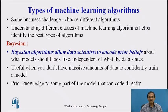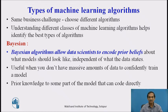The first class is Bayesian algorithms. A Bayesian algorithm allows data scientists to encode prior beliefs about what the model should look like and how much independence exists in a particular dataset. It is useful when you do not have a massive amount of data to confidently train a model — for example, for detecting a criminal using past data when very little data is available. Prior knowledge of part of the model can be coded directly to guide us toward our goal.